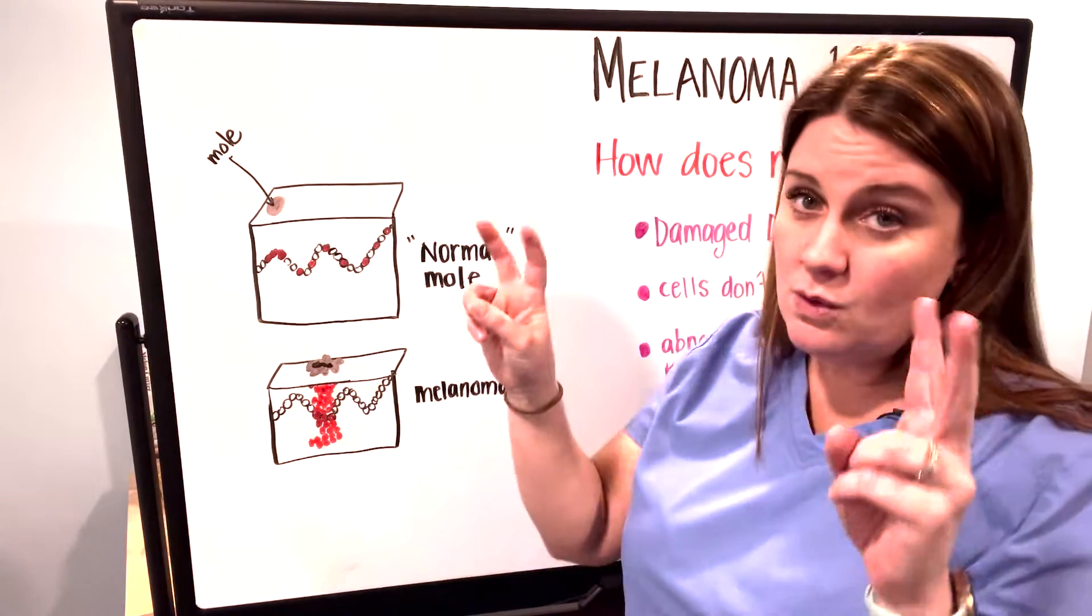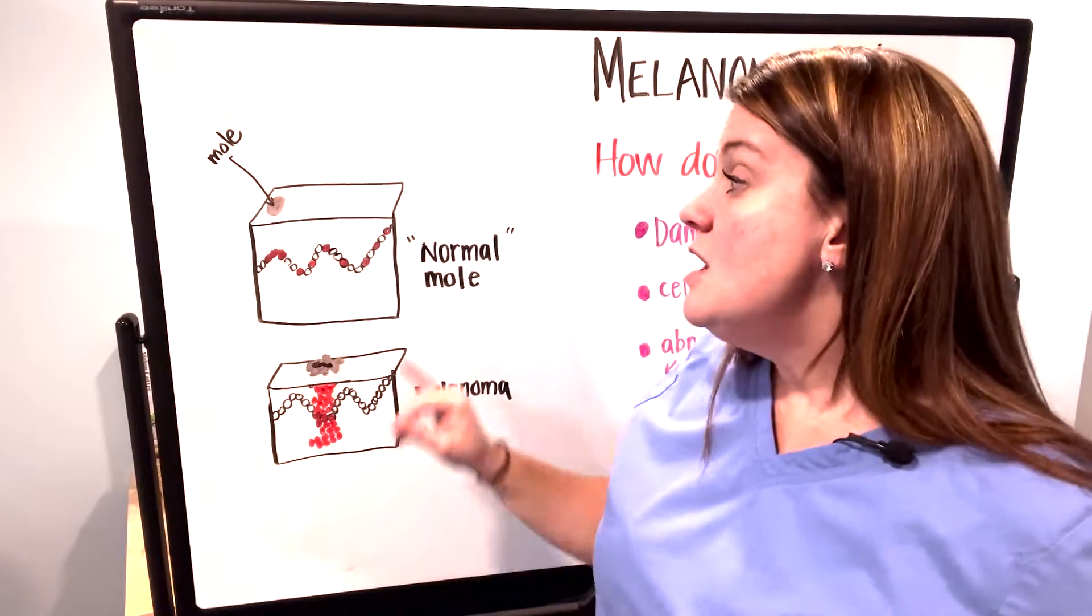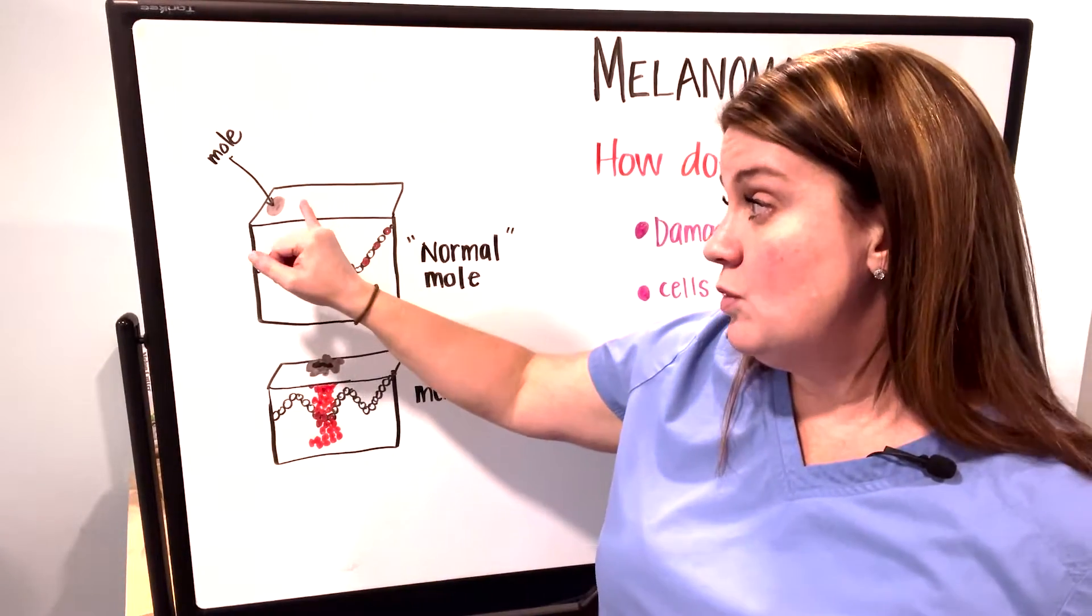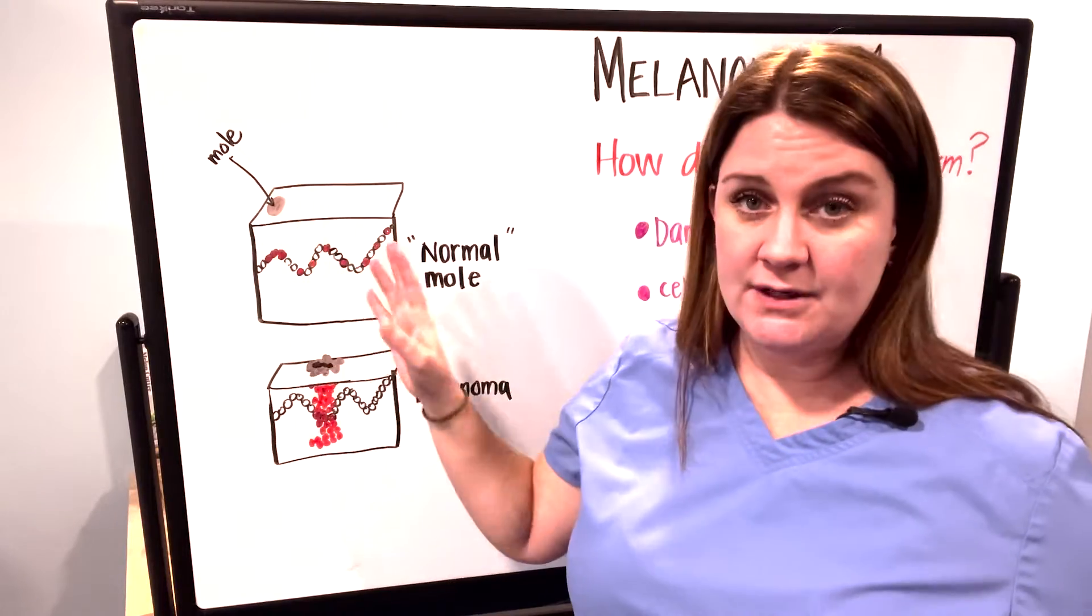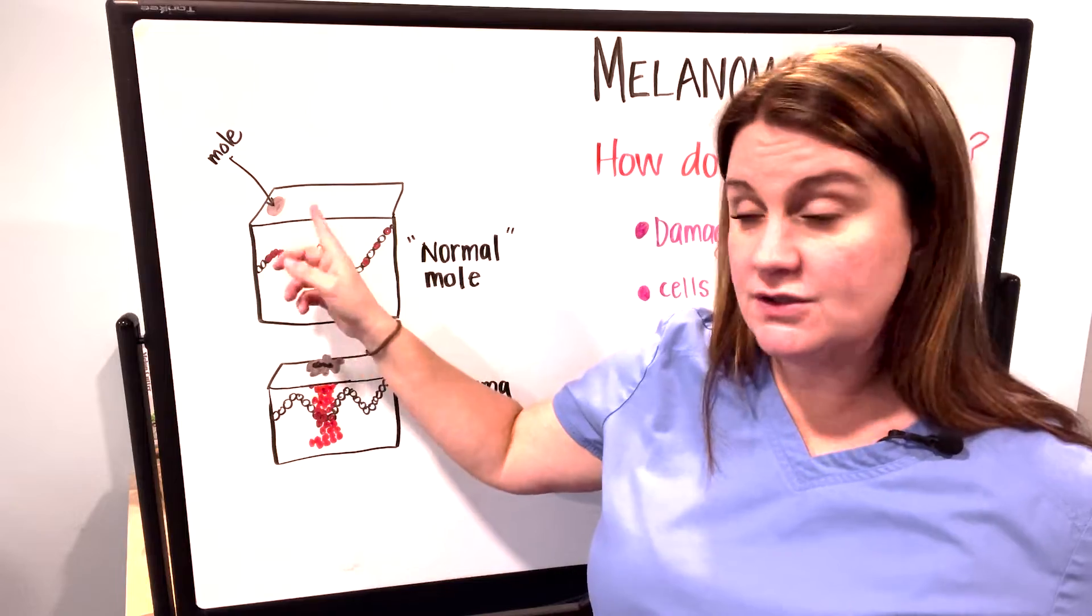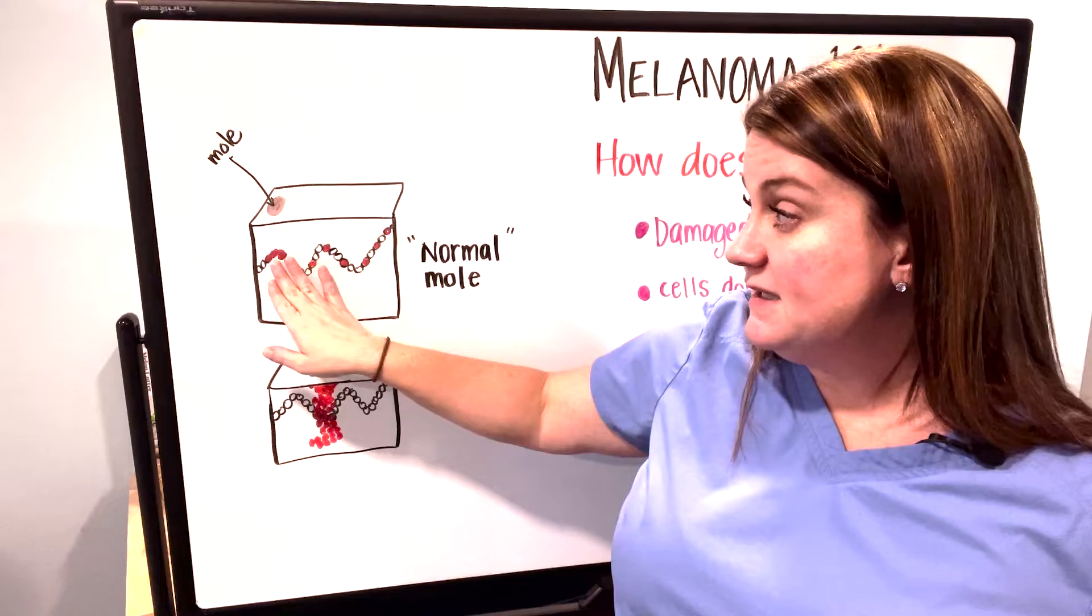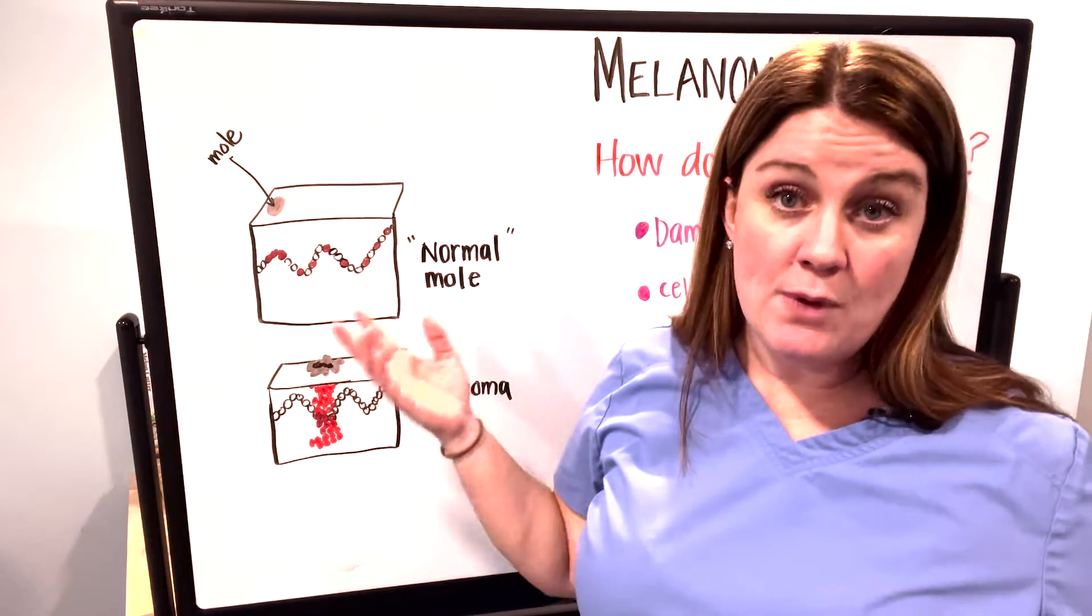When you look at a normal mole, you'll see that it has very regular borders and appears normal in color. This little cluster of melanocytes gives rise to a mole.